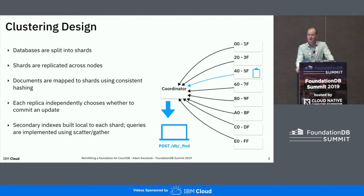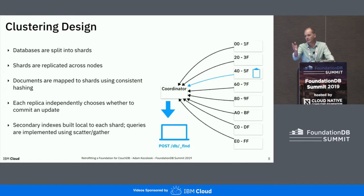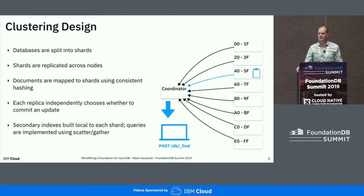Every replica of a shard accepts or rejects updates independently — there's no consensus going on. The shards maintain enough metadata to synchronize after the fact and ultimately converge to the same view of the world, but that can be a multi-version view. From an indexing perspective, each shard builds a local index, which is great for scaling indexing throughput, but it means querying secondary indexes is a full scatter-gather operation, because we don't know a priori which nodes host the relevant portions of the index. This is a simple clustering design that's served us well in production.